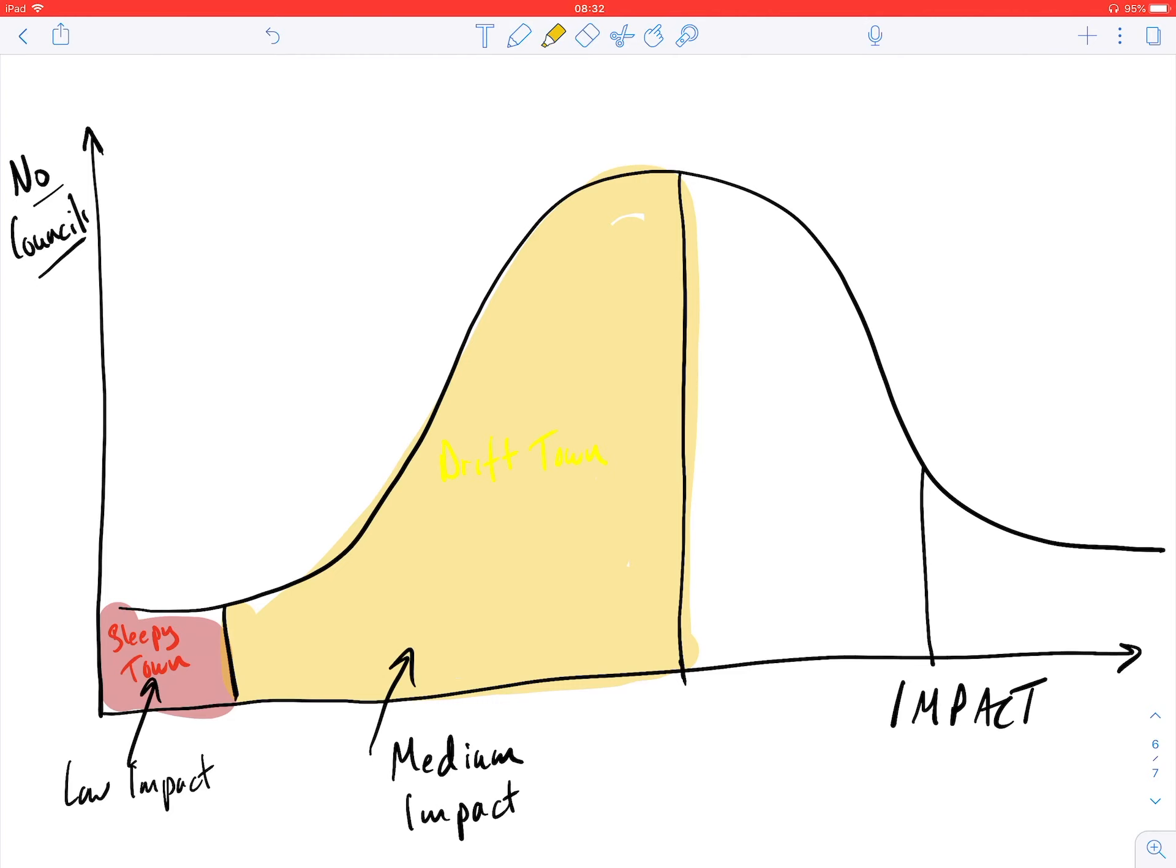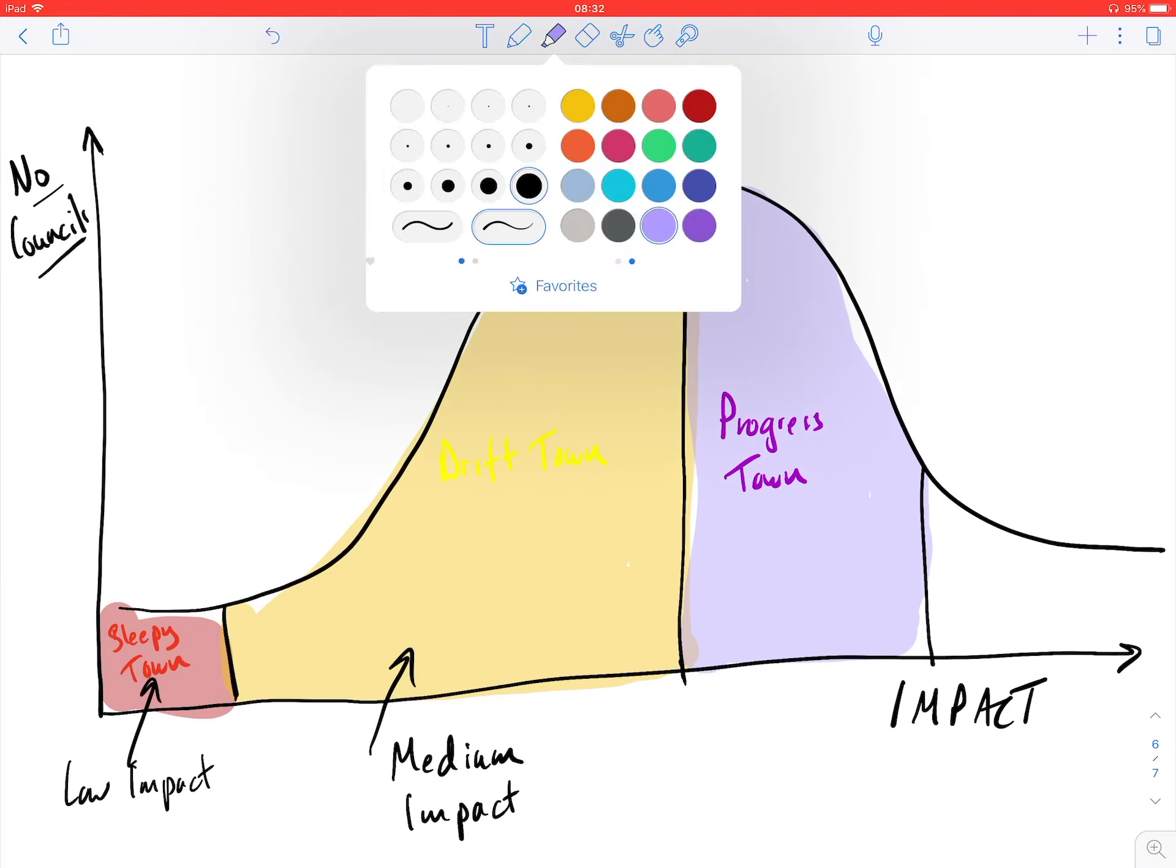As we go through these different segments, we get to this area here called progress town, where things are going better. And then there's the ones that we want—maybe your council, ones you've read about in your local area—in this top zone called impact town, where projects seem to be going faster and they're making an impact.